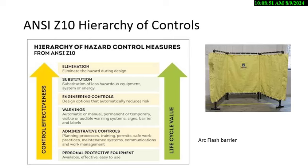This is an arc flash barrier — a case where you're going to designate the 42-inch boundary where only a trained, qualified person wearing arc flash equipment can work on live electrical, keeping others out of the area. Administrative controls include training, safe work permits, communication, and work management. PPE is always the last one. I grew up with five of these; the warning level is a new one and it's appearing on a lot of questions.